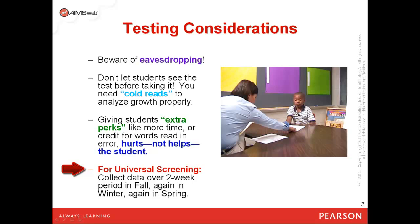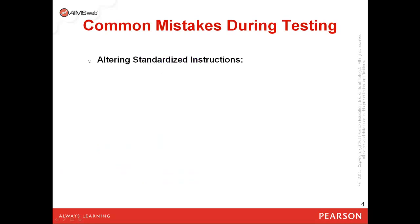As a trainer and also a user of AIMSweb in the schools in which I've worked over the years as a school psychologist, I've noticed a few of these common mistakes made during testing. First, I sometimes see people alter the standardized instructions. They may do so with good intent to help the student, allow the student to perform better, or help the student understand the measure better. However, altering the standardized instructions can reduce your ability to interpret the data properly. We want to adhere to the exact standardized directions at all times. This is a real benefit for you and your data because all students in your school will be compared under the exact same conditions, allowing you the ability to interpret how well or how poorly students perform on that test and adjust instruction to improve that performance, not the directions to improve performance.